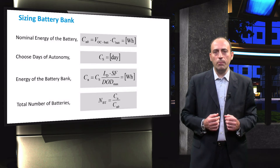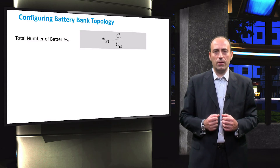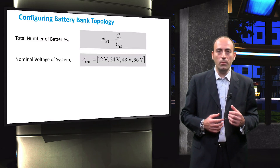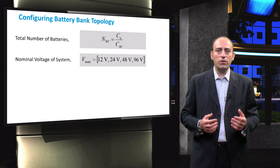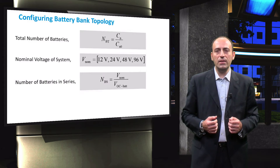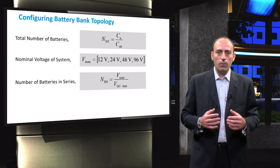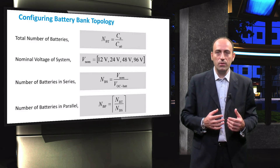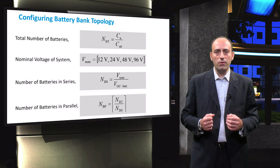Now the topology of the battery bank can be determined — that is, the number of batteries in series and in parallel. For the number of batteries in series, the nominal system voltage, VNOM, is chosen. Typical values for a standalone system are 12, 24, 48, or 96 volts. The number of batteries in series is calculated by dividing the nominal system voltage by the open circuit voltage of a single battery. The number of batteries connected in parallel is then determined by dividing the total number of required batteries by the number of batteries in series, with the resulting value rounded up to the nearest integer.